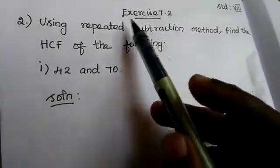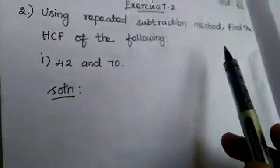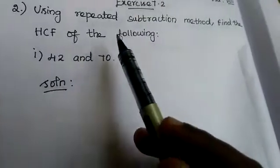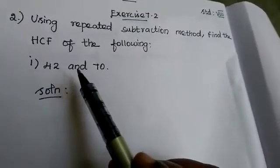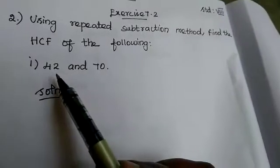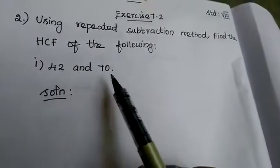Now we are doing exercise 7.2, second sum, using repeated subtraction method to find the HCF. Now what is the repeated subtraction method for finding the HCF? Firstly we want to check which number is greater.